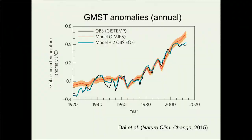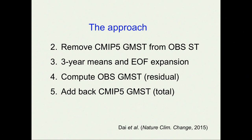Step one is to compute the CMIP-5 model and realization mean global mean surface temperature — that's the red curve. Its long-term trend has been adjusted downward slightly to match that of the observations. This doesn't affect our conclusions, but it makes for a better-looking picture. Step two is to remove this time series from the observed surface temperature at every grid point in space by linear regression.